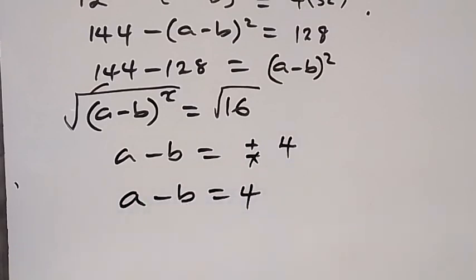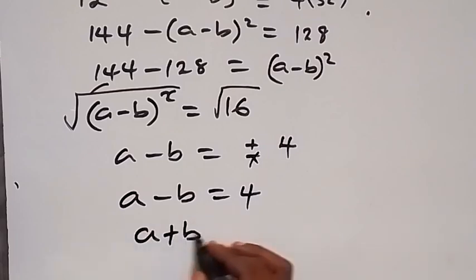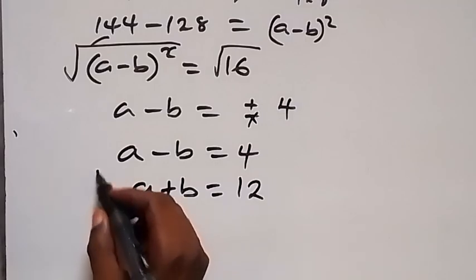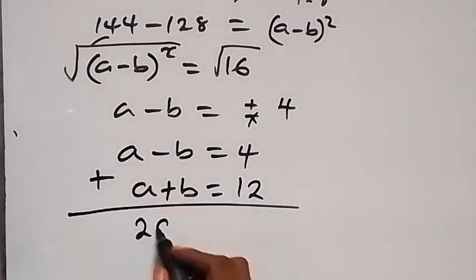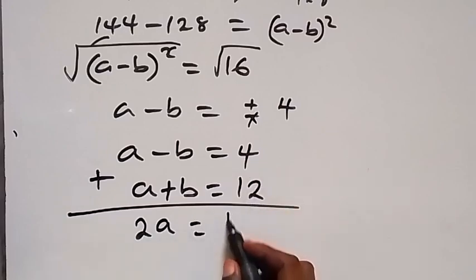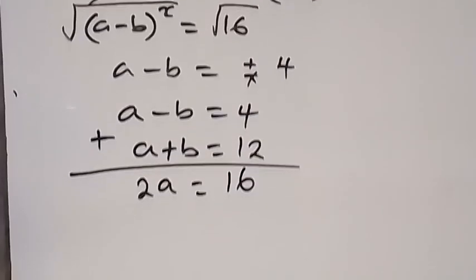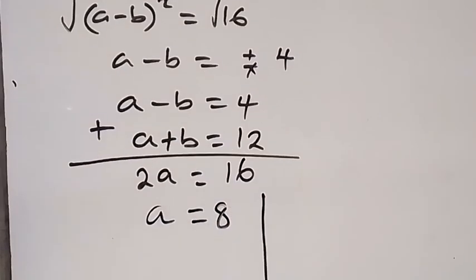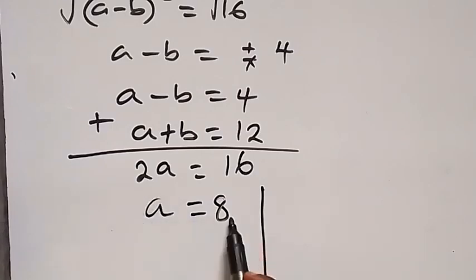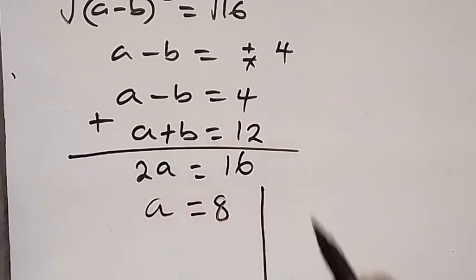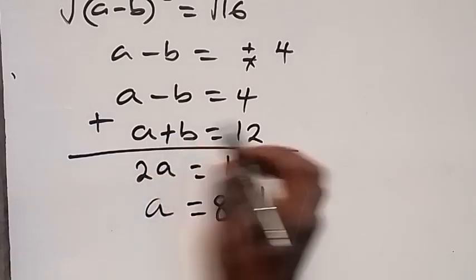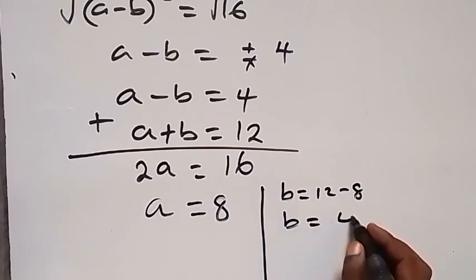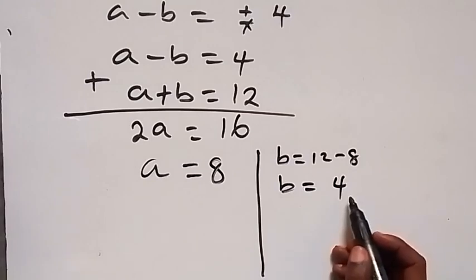Now solving the system a plus b equals 12 and a minus b equals 4 simultaneously: adding the two equations gives 2a equals 16, so a equals 8. Substituting a equals 8 into a plus b equals 12 gives b equals 12 minus 8, so b equals 4. Therefore a equals 8 and b equals 4.